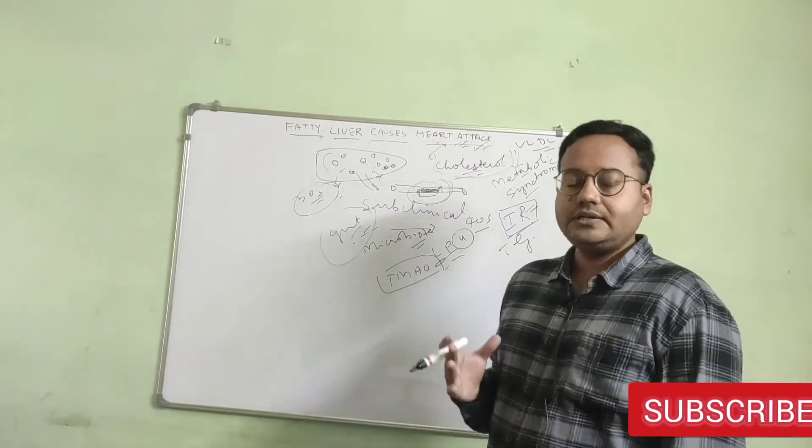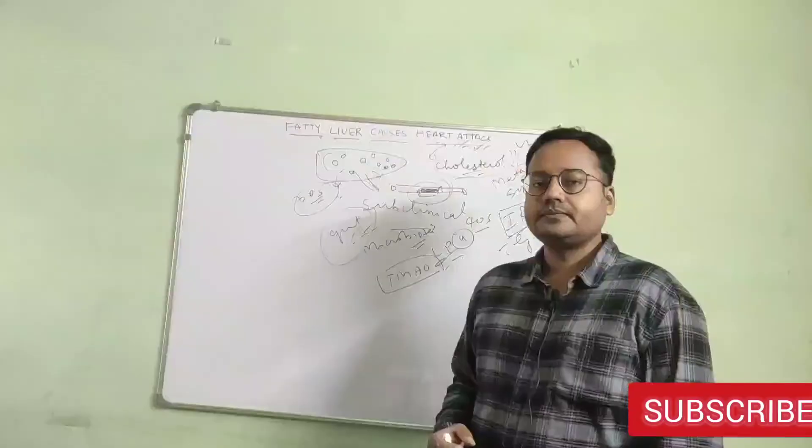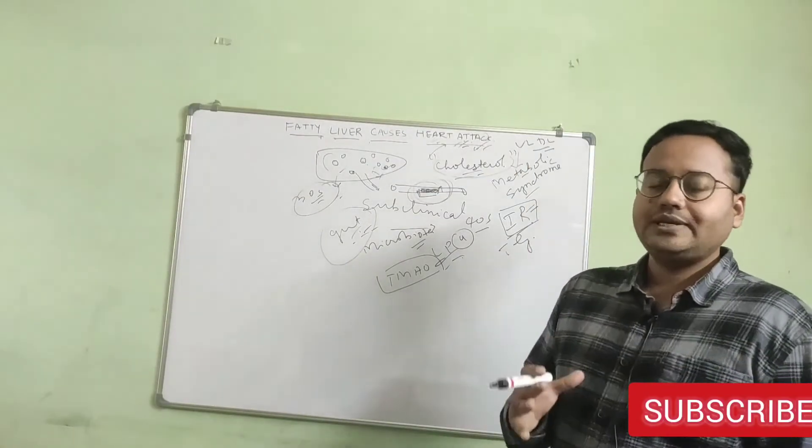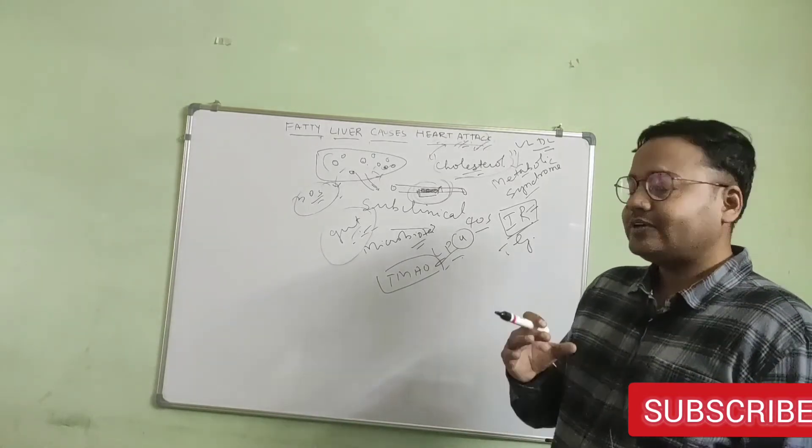Thing that is very bad for liver is fructose. Too much fructose consumption can also harm your liver cells. And we get too much fructose from all those junk foods where they add high fructose corn syrup. That is also very bad for liver.